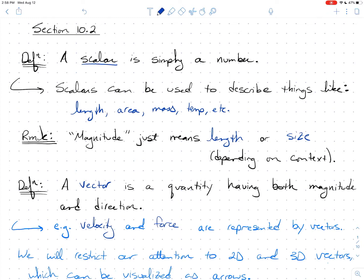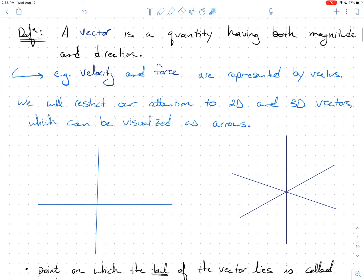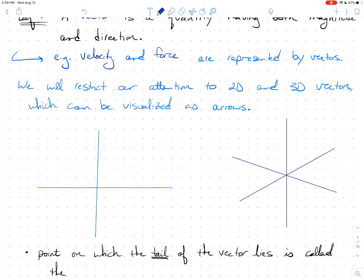Your velocity is not just how fast you're going — it's also the direction you're going. We're going to restrict our attention to two-dimensional and three-dimensional vectors, and the nice thing about those is they can be visualized as simply arrows. In two-space, the magnitude is the length of the arrow and the direction is the slope of that vector. The same idea applies in three-space.